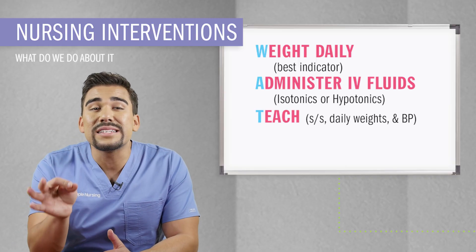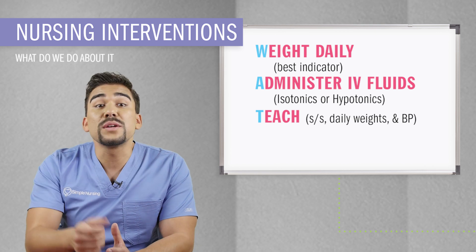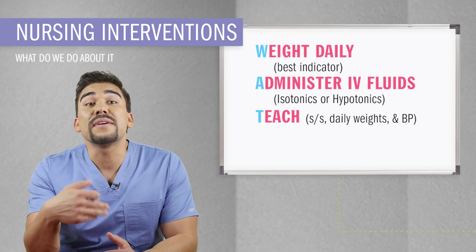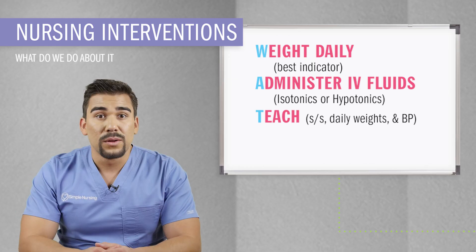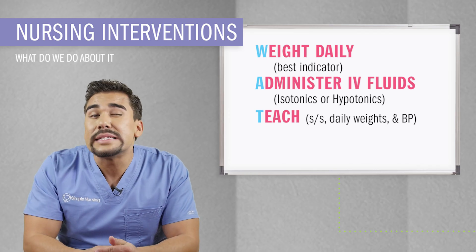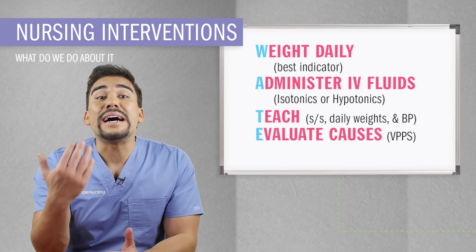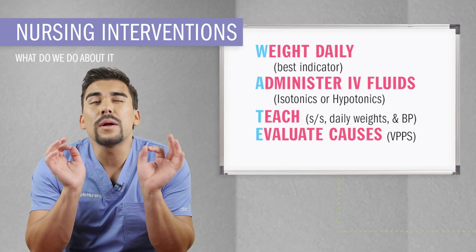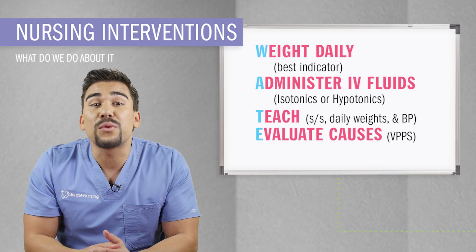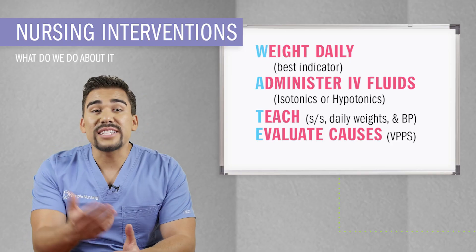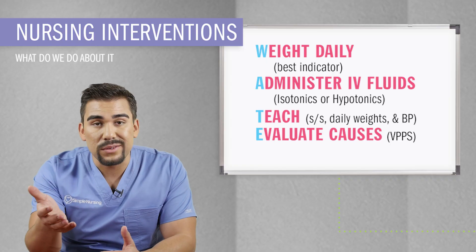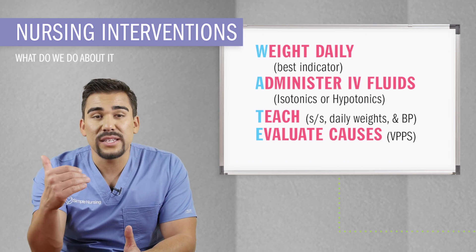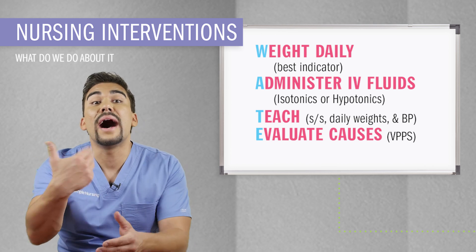T is for teach the client regarding the causes of dehydration, especially when they're on diuretics for high blood pressure. We want to teach patients to monitor signs and symptoms related to their daily blood pressure readings, which is a huge indicator for early dehydration. E is for evaluate the cause of dehydration — is it from vomiting, sweating too much, not drinking enough water, or diarrhea, especially in our pediatric populations? Lastly, monitor vital signs like low blood pressure, thready rapid pulse, dark urine with high specific gravity, and high and dry labs like high BUN.